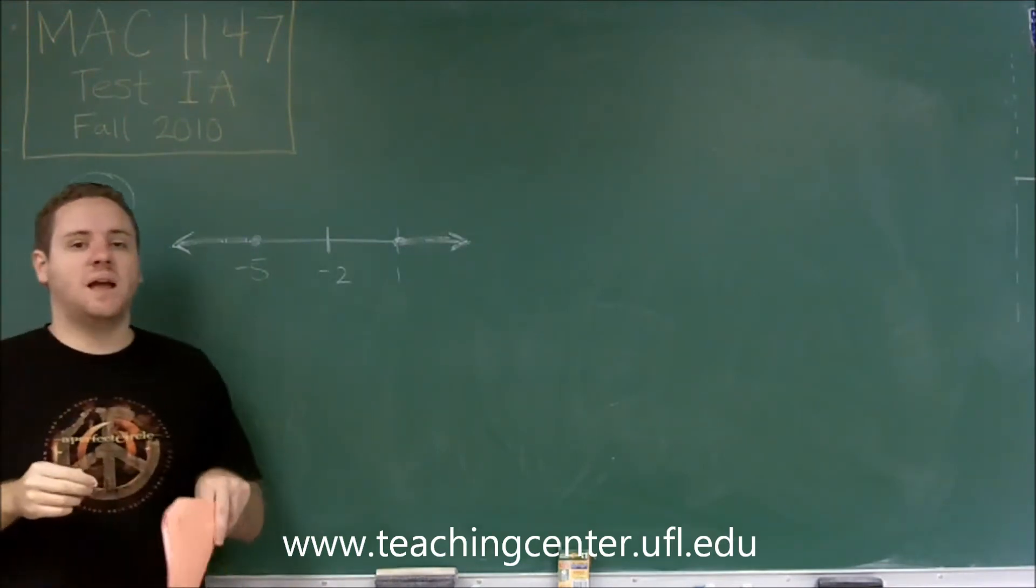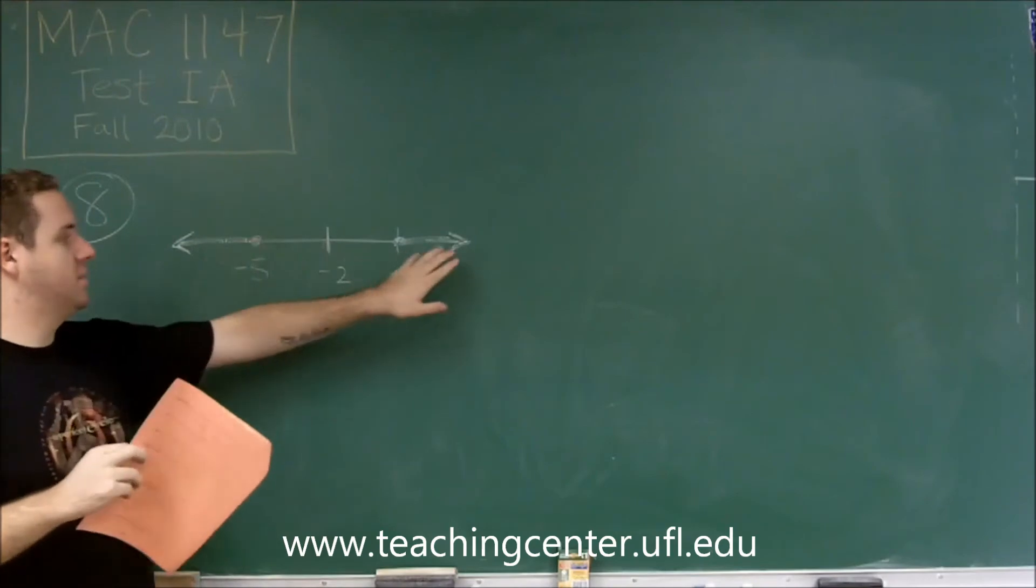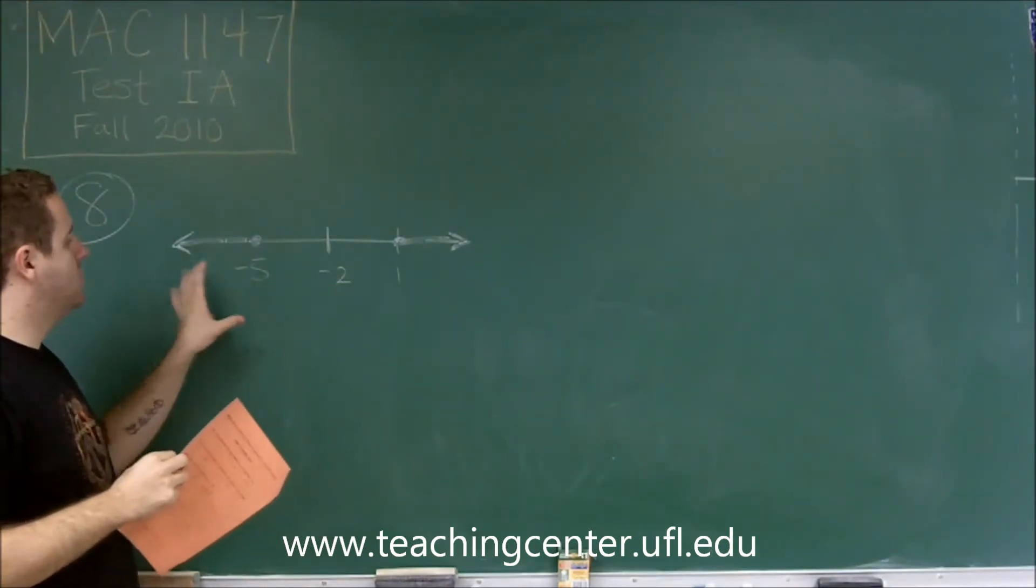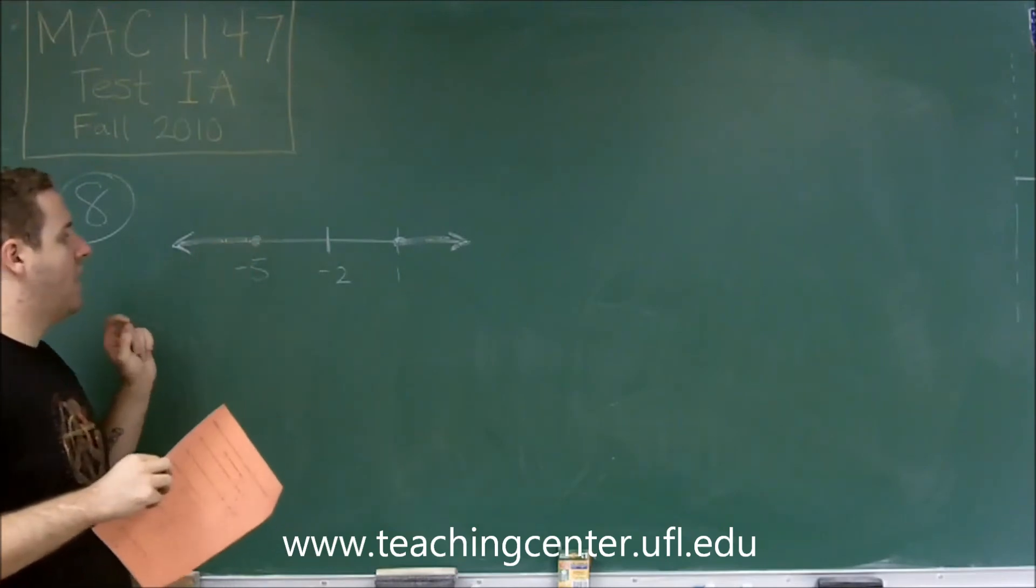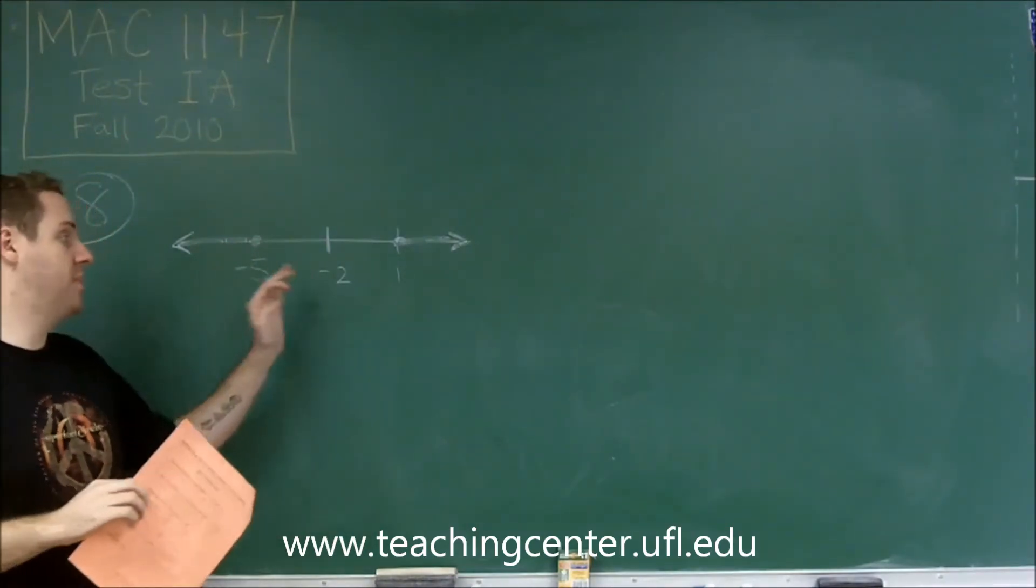The reason you want to find that is now you can say a single statement that describes all of these numbers. Your numbers here are every number that is at least 3 away from negative 2.